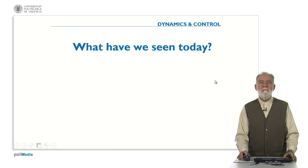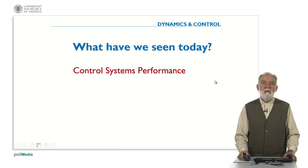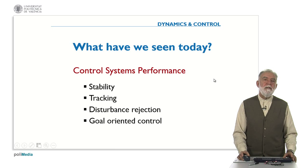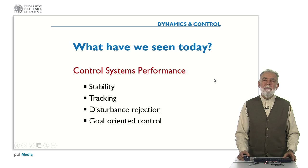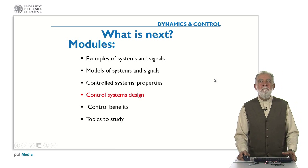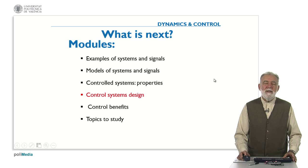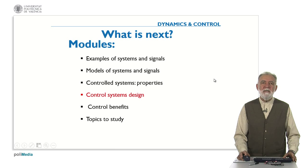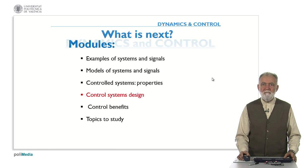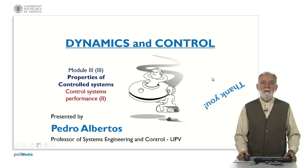So what have we seen today? We have seen some other performance properties of control systems: in particular stability, but also the tracking property, disturbance rejection, and goal-oriented control. There are many other performance properties we will probably see later. What is next? We have seen the concepts of systems and signals, the models, and the properties of control systems. Now we face probably the most difficult part, which is the control system design — we are going to explore how we can design a control system to achieve the desired performance. That's all for today, thank you.